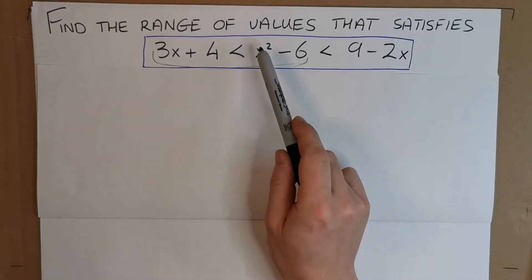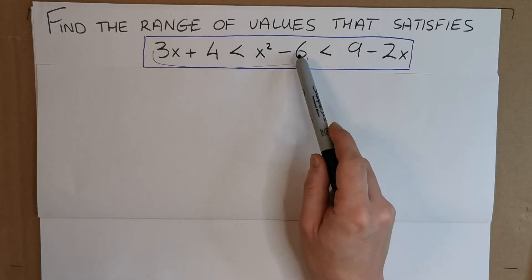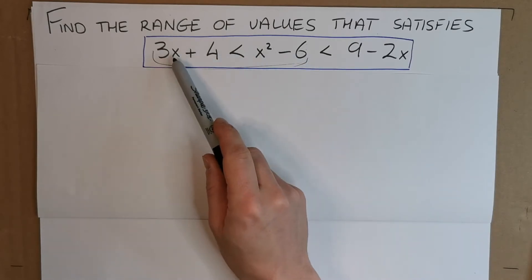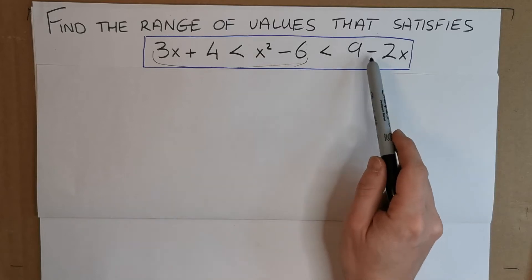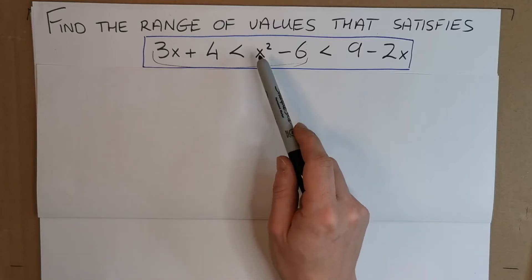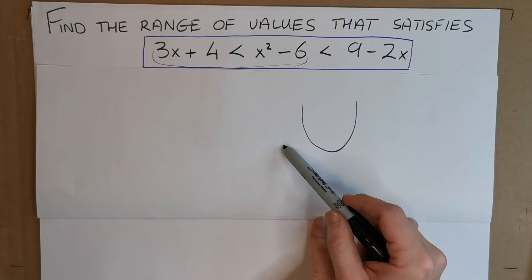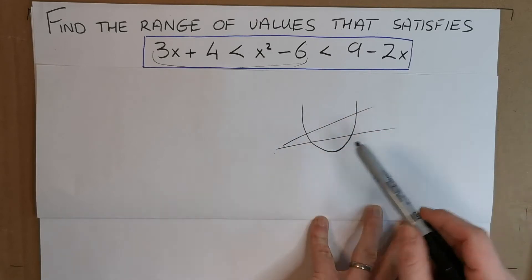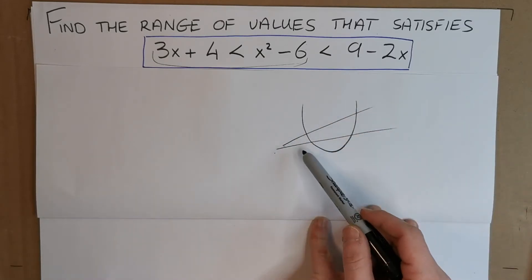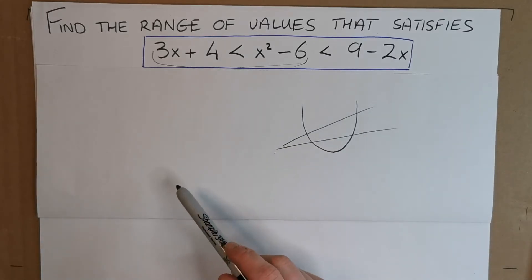So if you like, it's this curve and then someone wants to know where is this curvy graph greater than 3x plus 4 but also less than 9 minus 2x. From a point of view of visualizing this in your head, you have this U-shaped curve and you have these two lines. And you want to know where it's greater than one but less than the other. So it's like some little area where that happens.